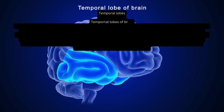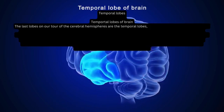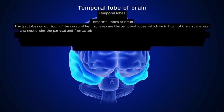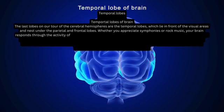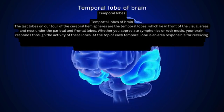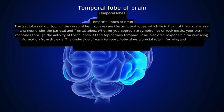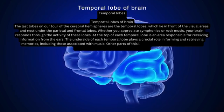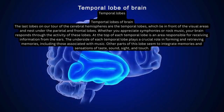Temporal Lobes. The last lobes on our tour of the cerebral hemispheres are the temporal lobes, which lie in front of the visual areas and nest under the parietal and frontal lobes. Whether you appreciate symphonies or rock music, your brain responds through the activity of these lobes. At the top of each temporal lobe is an area responsible for receiving information from the ears. The underside of each temporal lobe plays a crucial role in forming and retrieving memories, including those associated with music. Other parts of this lobe seem to integrate memories and sensations of taste, sound, sight, and touch.